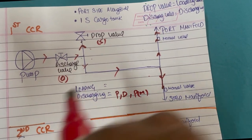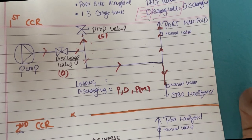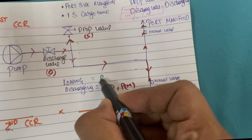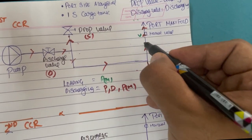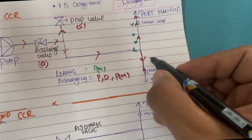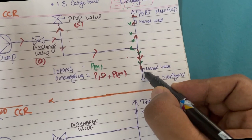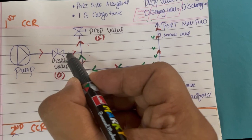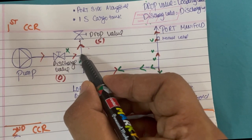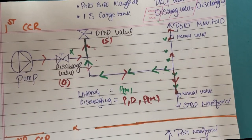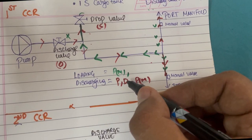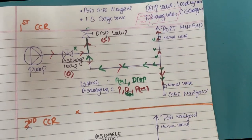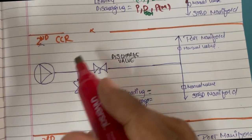To summarize for discharging: start the pump, open the discharge valve, and open the port side manual valve. For loading from the port side manifold: open the port side manual valve. The cargo comes in and will flow toward both manifold sides, but as the starboard manifold valve is shut, the cargo flows toward the drop valve. Keep the discharge valve shut, open the drop valve, and load. So for loading: open port side manifold valve and drop valve.